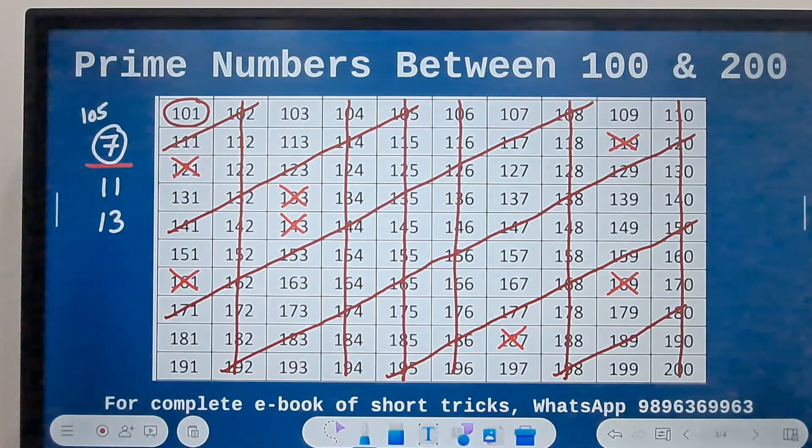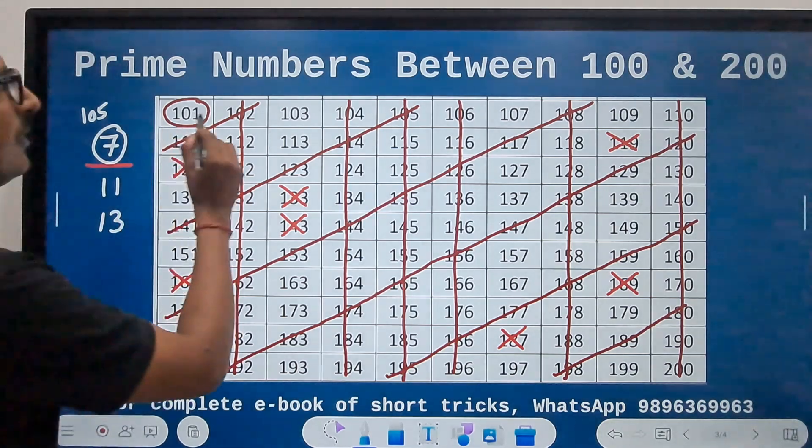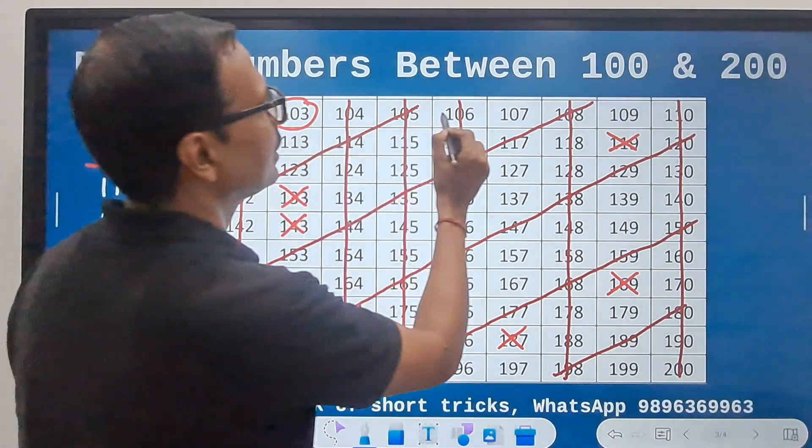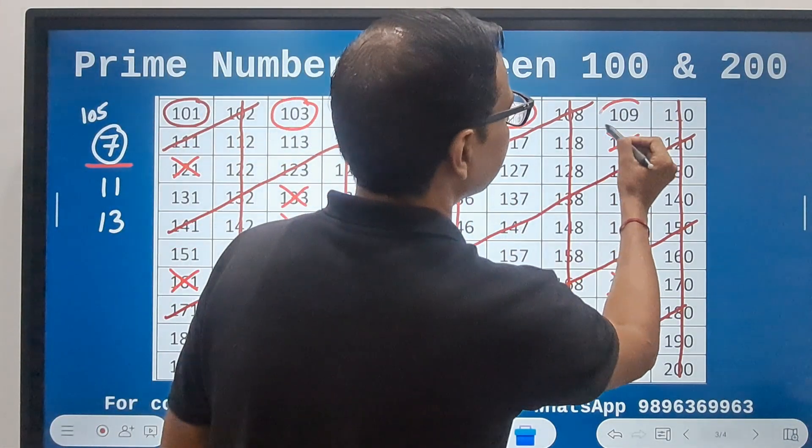Now let's encircle the remaining numbers. So 101, 103, 107, 109.